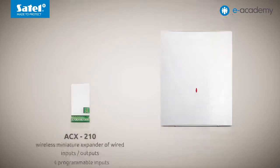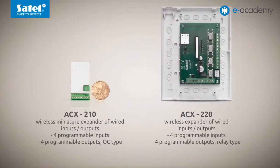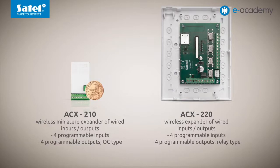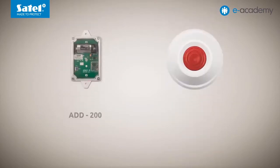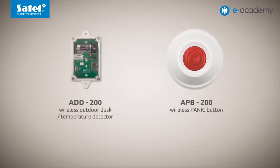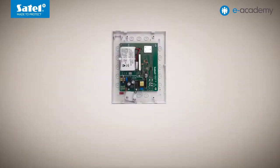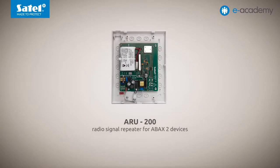For expansion of the ABAX2 system with wired devices, two expanders can be used, each with four inputs and four programmable outputs. The miniature model comes with OC-type outputs, while the bigger version has relay outputs. Two further new devices are the ADD200 wireless outdoor dusk and temperature detector and the ABP200 wireless panic button. To effectively increase the operation range of the ABAX2 system, the ARU200 radio signal repeater is used.